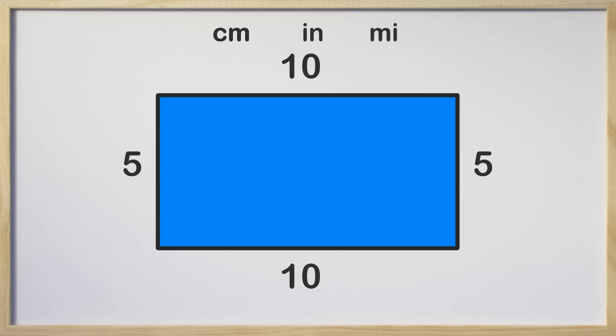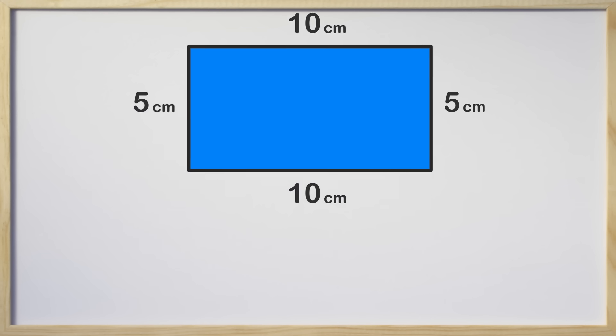Here is a rectangle. We can see someone measured the sides for us. Perimeter is something we can measure in units like centimeters or inches or even miles. If the problem we are given has units listed we need to remember to keep that unit in the answer. To find the perimeter of a polygon you just add up all the sides together. You can add the sides in any order but I like putting the same numbers together to make it easier. What is 10 plus 10 plus 5 plus 5?